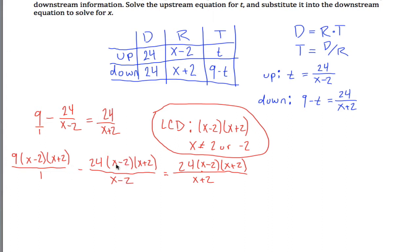This x minus 2 and this x minus 2 cancel out, and this x plus 2 and this x plus 2 cancel out. So what I'm left with is just 9 times x minus 2 times x plus 2, which I don't have to write over 1, minus 24 times x plus 2 is equal to 24 times x minus 2. Again, over 1, but you don't have to write that.